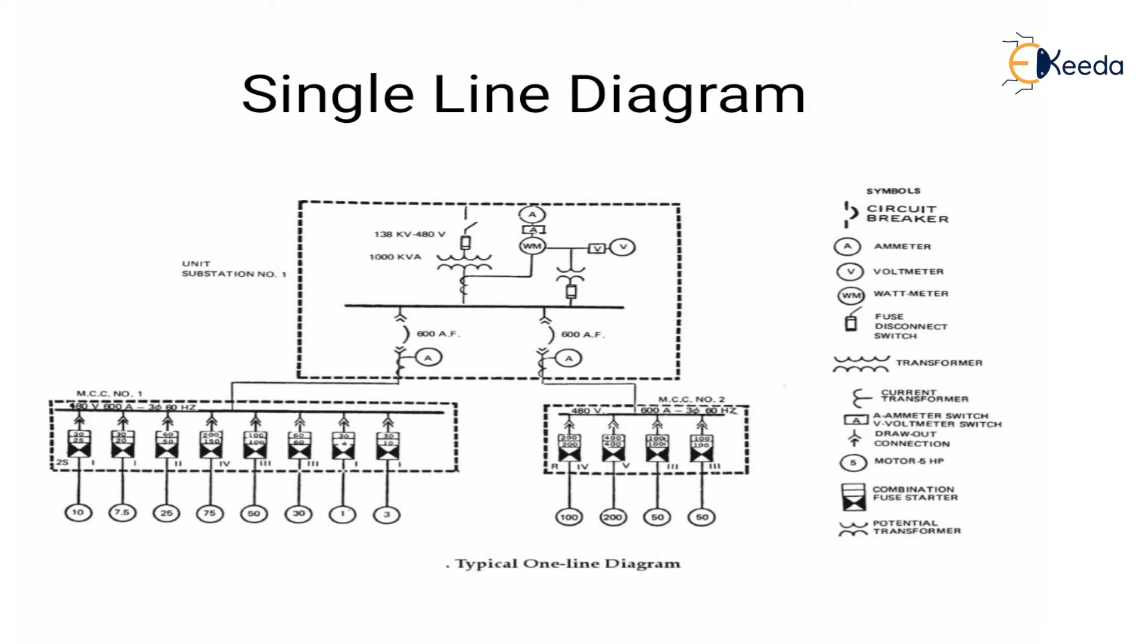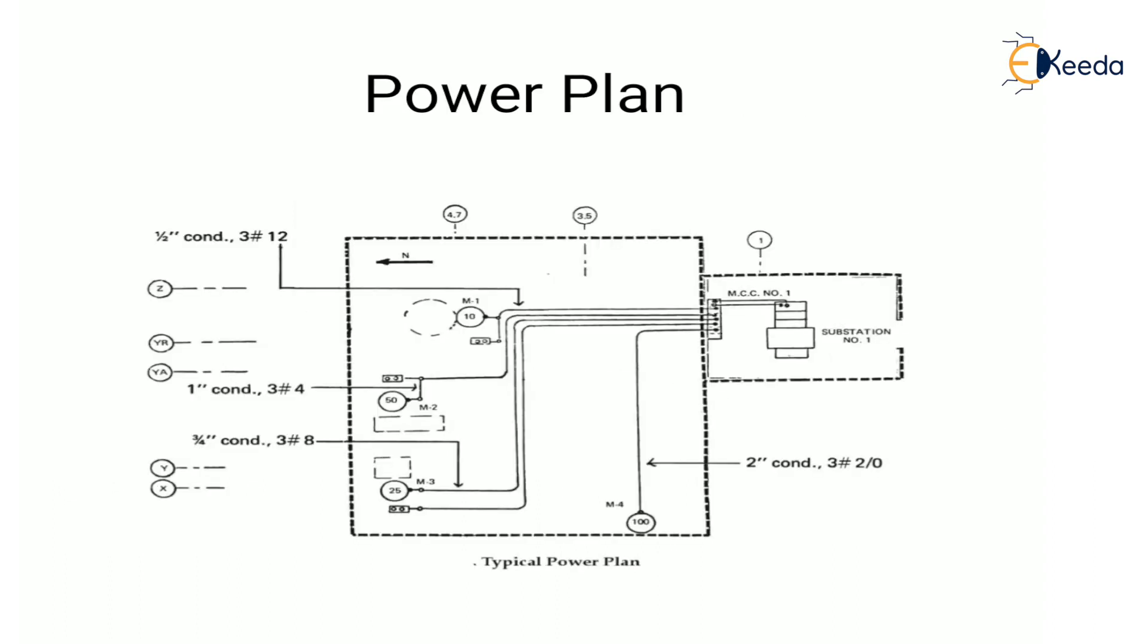Next is power plan. This diagram is a physical plan which is drawn to scale. It shows the location of all motors and other electrical loads and how they are fed. Cable and conduit size are also indicated in the power plan. If the project is large, separate diagrams are often used to list their conduit and cable size.